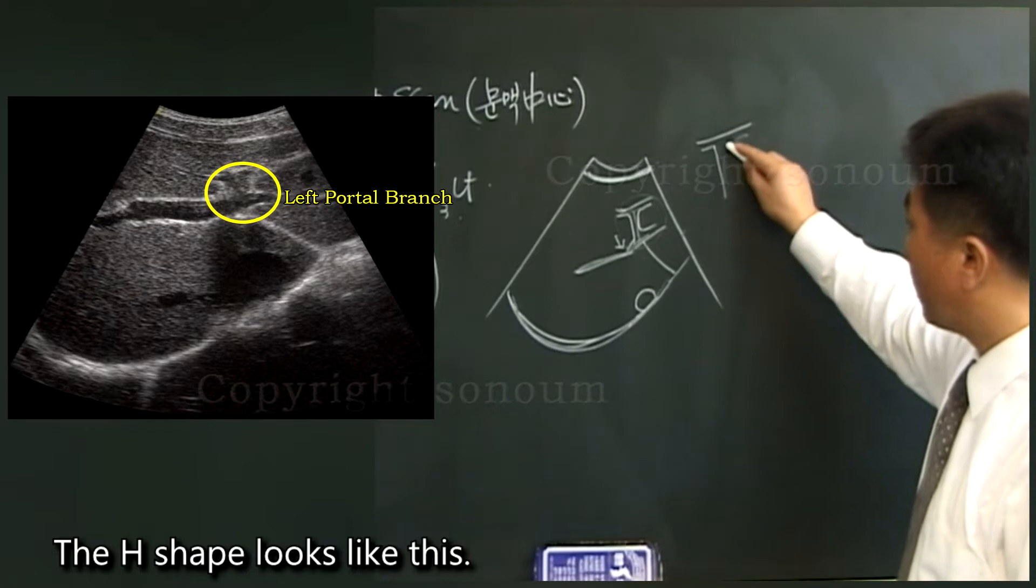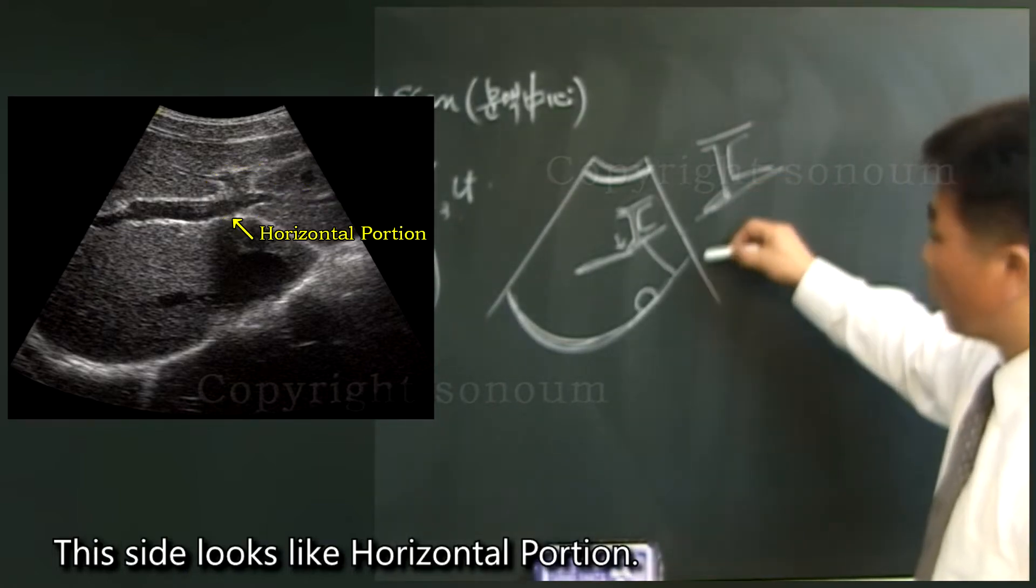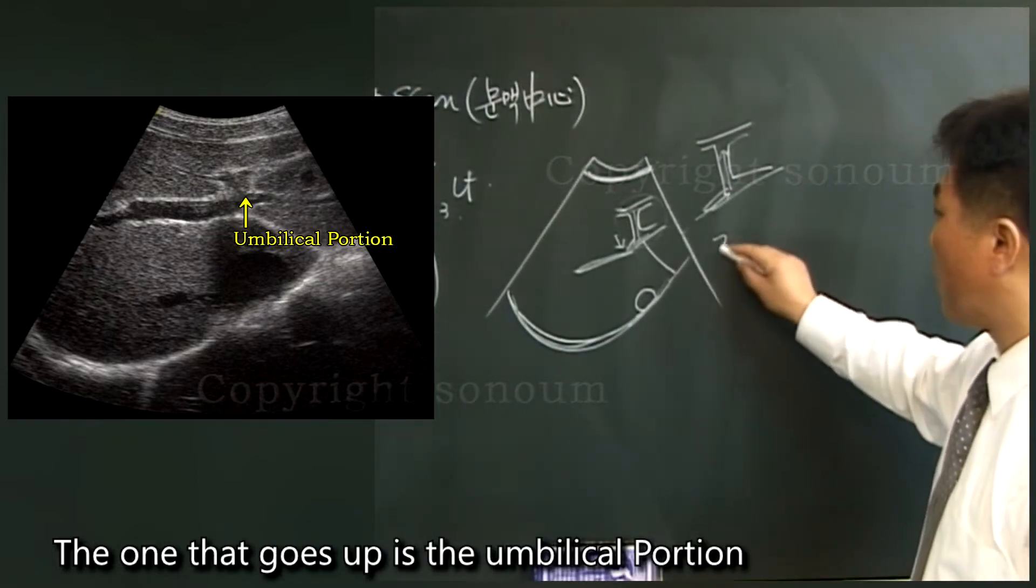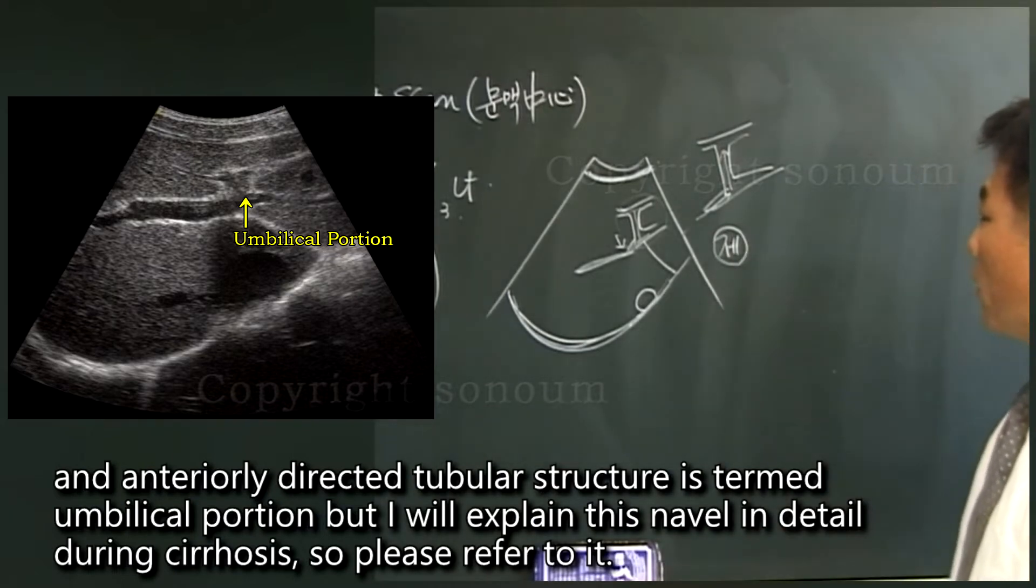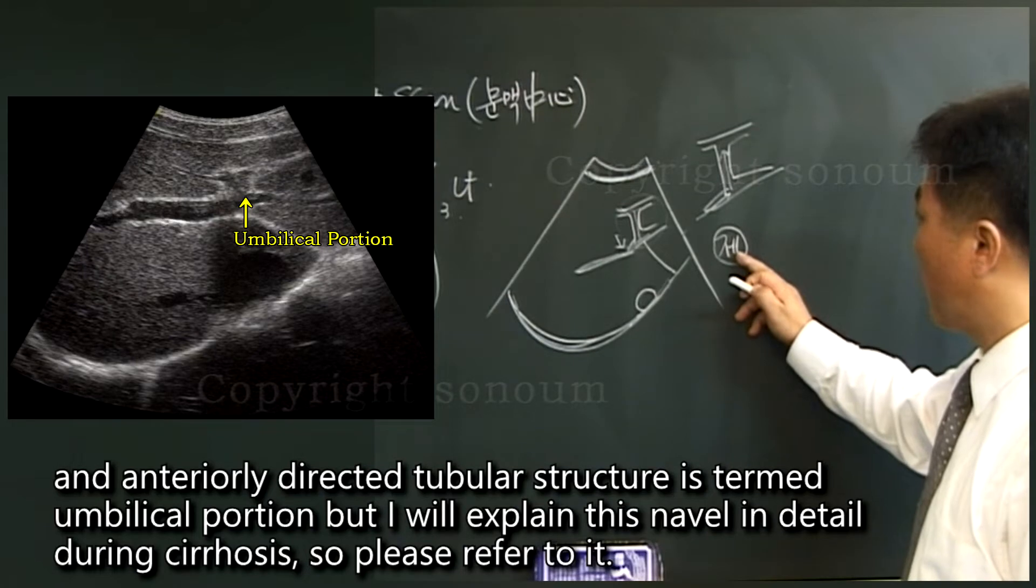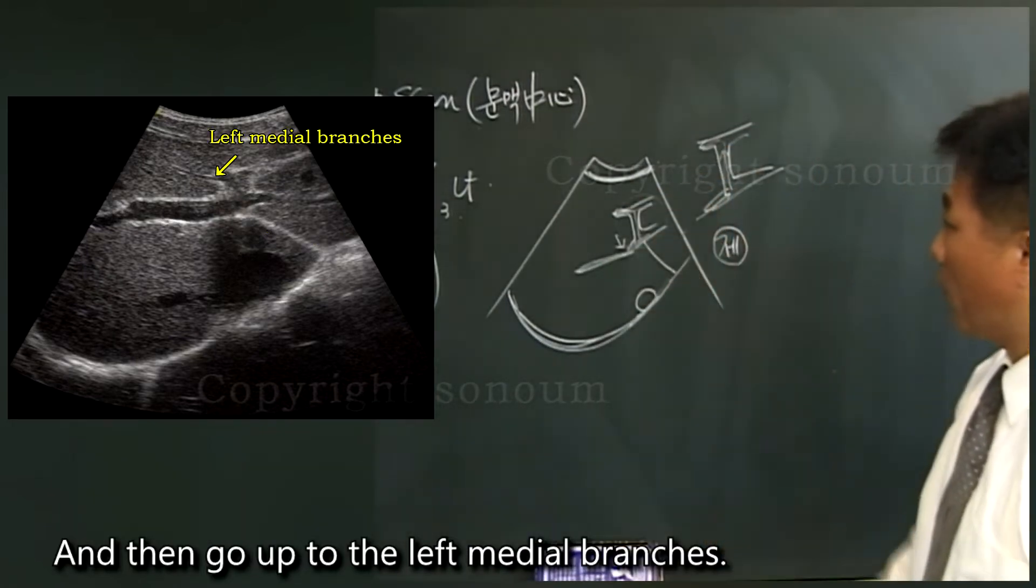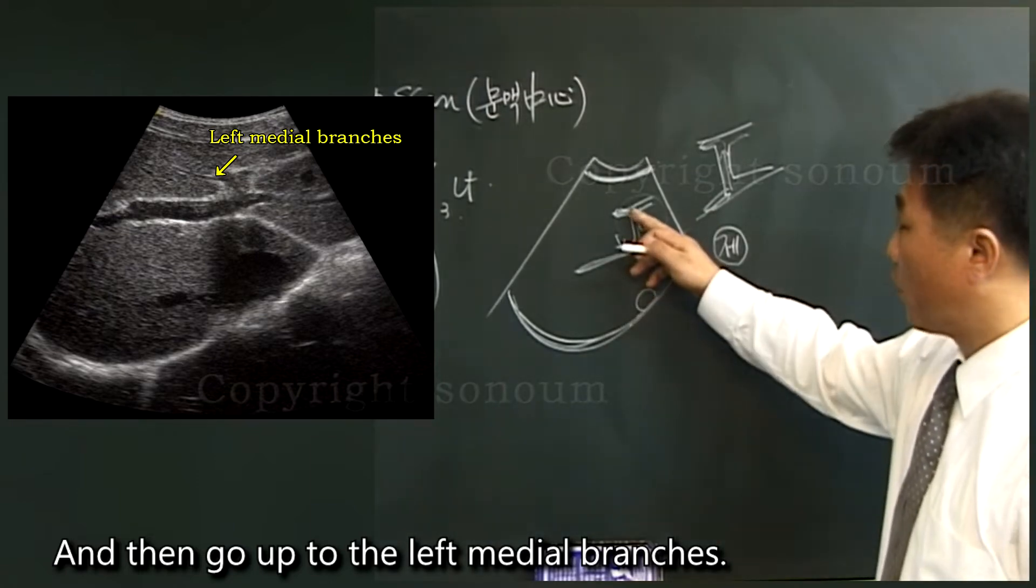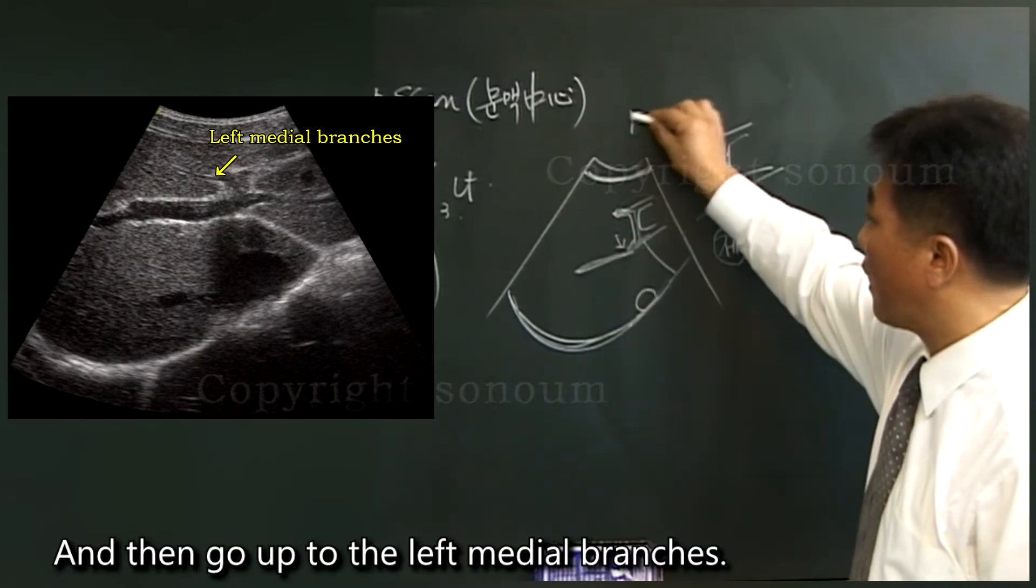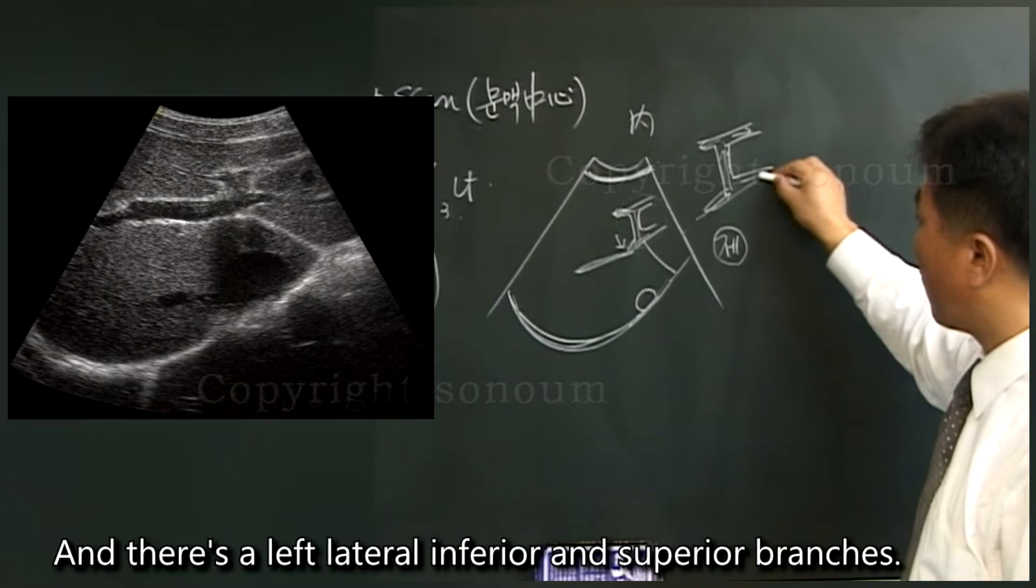The h-shape is the left portal branch. The h-shape looks like this. This side looks like horizontal portion. The one that goes up is the umbilical portion. And anteriorly directed tubular structure is termed umbilical portion. But I will explain this in detail during cirrhosis. So please refer to it. And then go up to the left medial branches. And there's a left lateral, inferior, and superior branches.